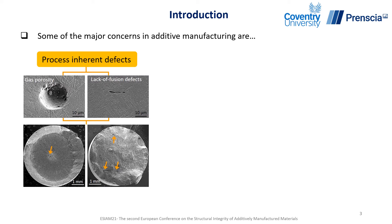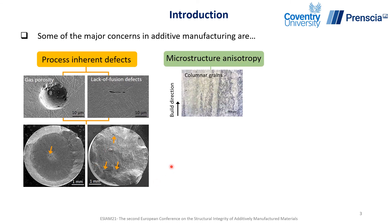Although additive manufacturing processes offer many advantages compared to conventionally built manufacturing processes, there are some major concerns, which are process-inherent defects such as gas porosity and lack of fusion defects. These defects are mainly observed in powder-based processes because of poor powder quality or process instability and process parameters. The presence of these defects will act as stress concentration areas when these materials are cyclically loaded and lead to crack initiation and premature failure.